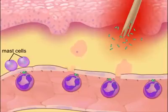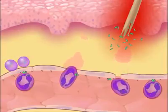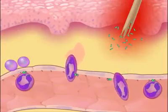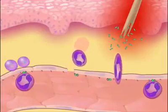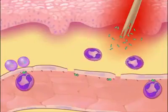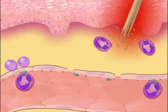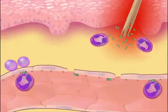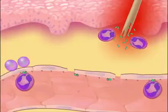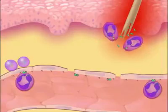The neutrophils now undergo dramatic changes in shape and squeeze through the endothelial wall into the interstitial tissue fluid. This process is called extravasation. The neutrophils, followed by other types of phagocytes, are attracted to the damaged site by chemotactic substances released by bacteria and tissue breakdown products. They ingest and destroy invading bacteria.